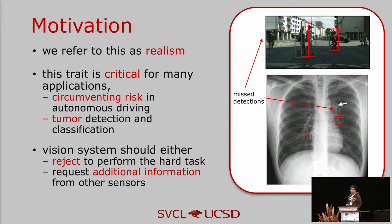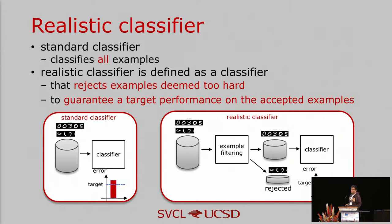Another example is in medical detection. We would like a computer to do easy tasks to guarantee good performance, and leave hard ones for human experts rather than having the computer process every image and provide uncertain results. In summary, nobody cares whether performance is 70%, 80%, or 90% — they only care whether the system can guarantee a desirable target performance. So the vision system should reject hard tasks and require additional information to guarantee a target performance on accepted ones.